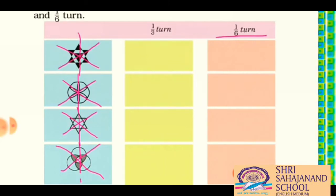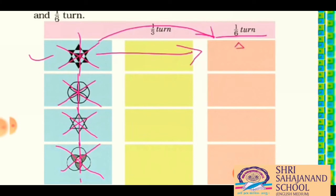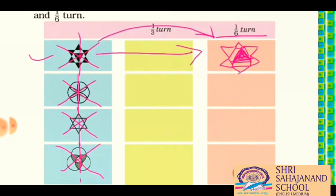You will see that the first picture will not look the same in each one-sixth turn. It will look like this — the outer will have triangles, but the inner triangle will be just opposite, dear students. Remember this. So the first picture is just opposite of its original picture in each one-sixth turn. Now come to the second picture — it is equally divided with symmetry lines, so it will look the same. I am writing 'same' — you have to draw this picture.